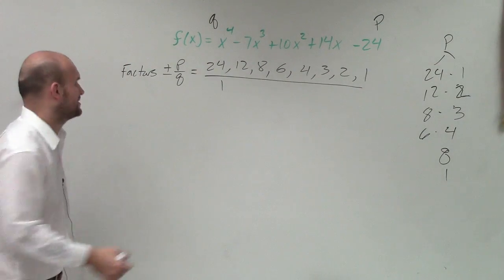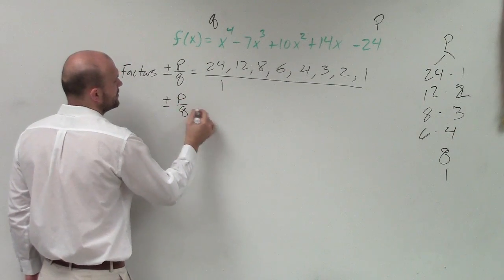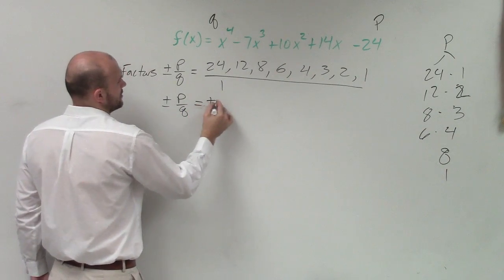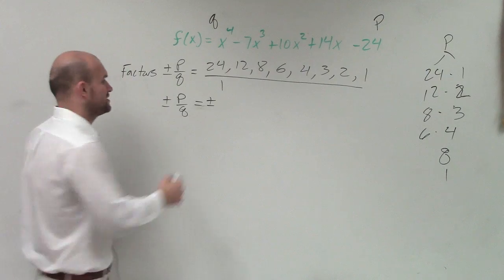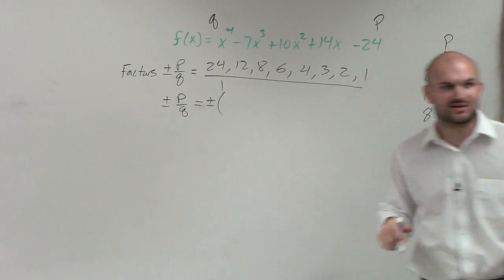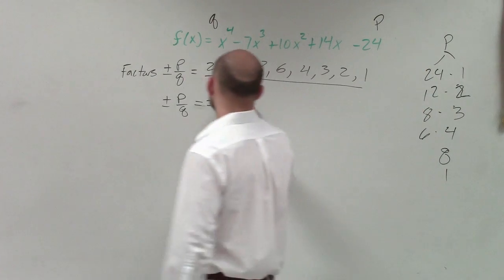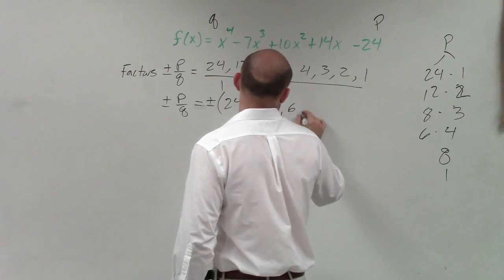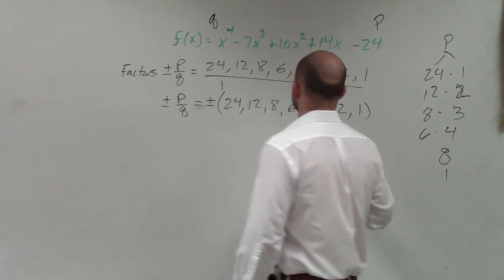So if I was going to do p over q, remember, it's the factors plus or minus p over q. My q, the coefficient of q is 1. So the only factors of 1 are 1 and 1. Therefore, it's going to be 24, 12, 8, 6, 4, 3, 2, 1 — all over 1. So all the possible rational zeros, p over q, is just going to be plus or minus. You can write plus or minus for every single term, or just put plus or minus outside of parentheses distributed to all of them: 24, 12, 8, 6, 4, 3, 2, 1.